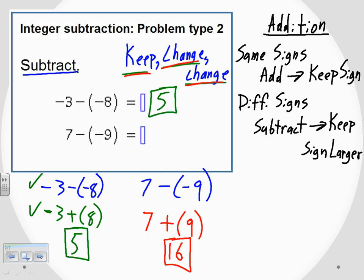So 7 minus our negative 9, the original question, is a positive 16.